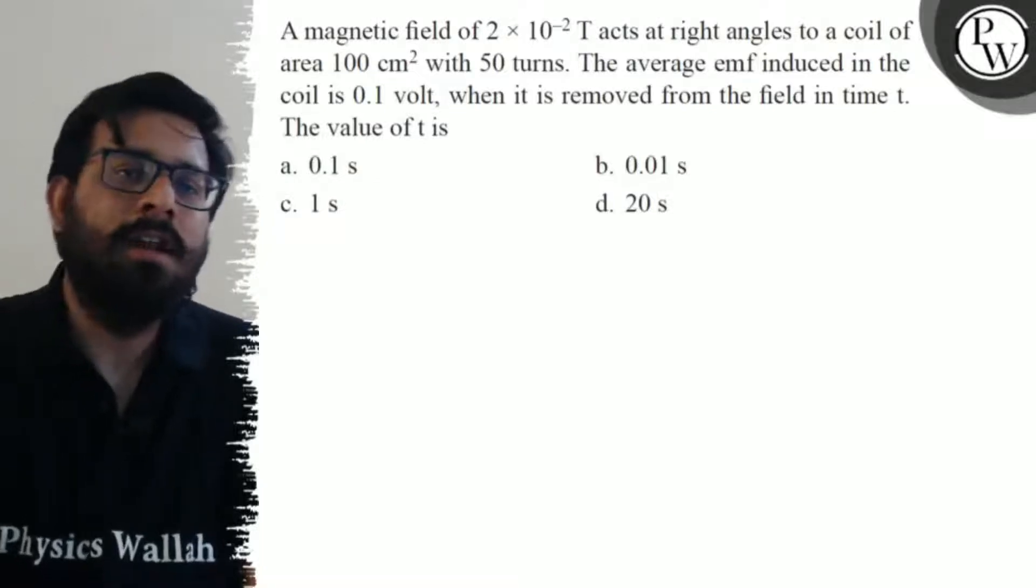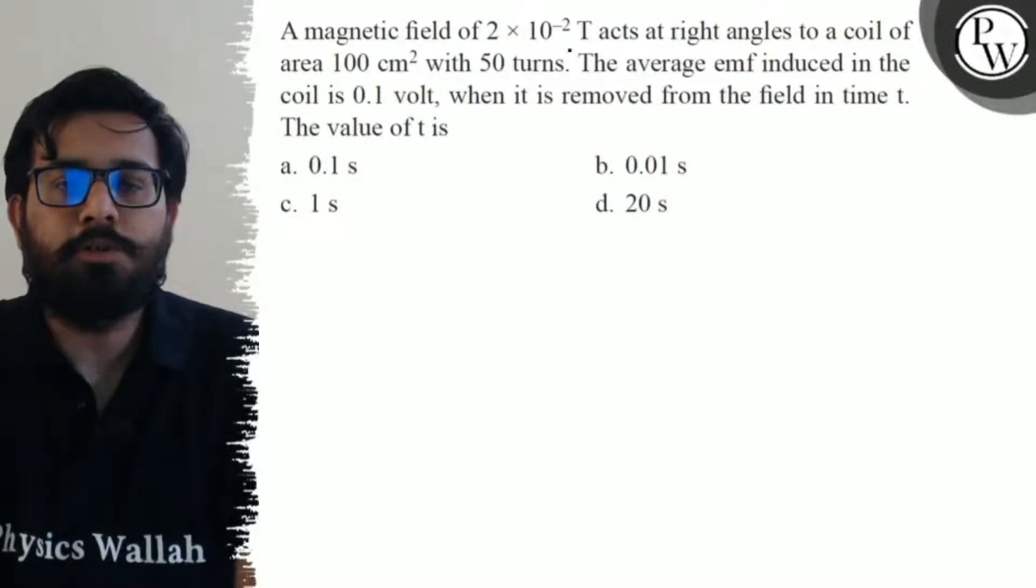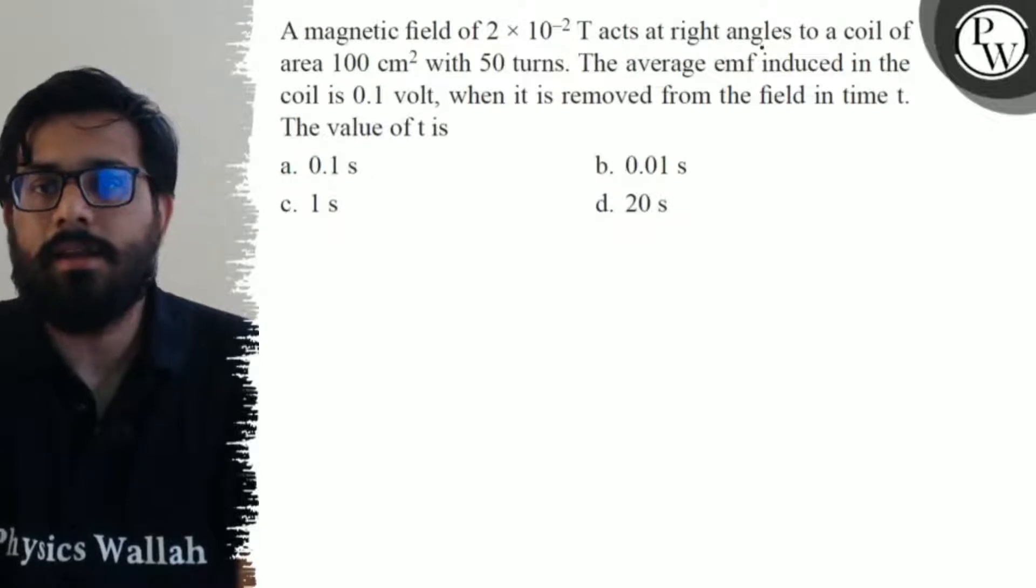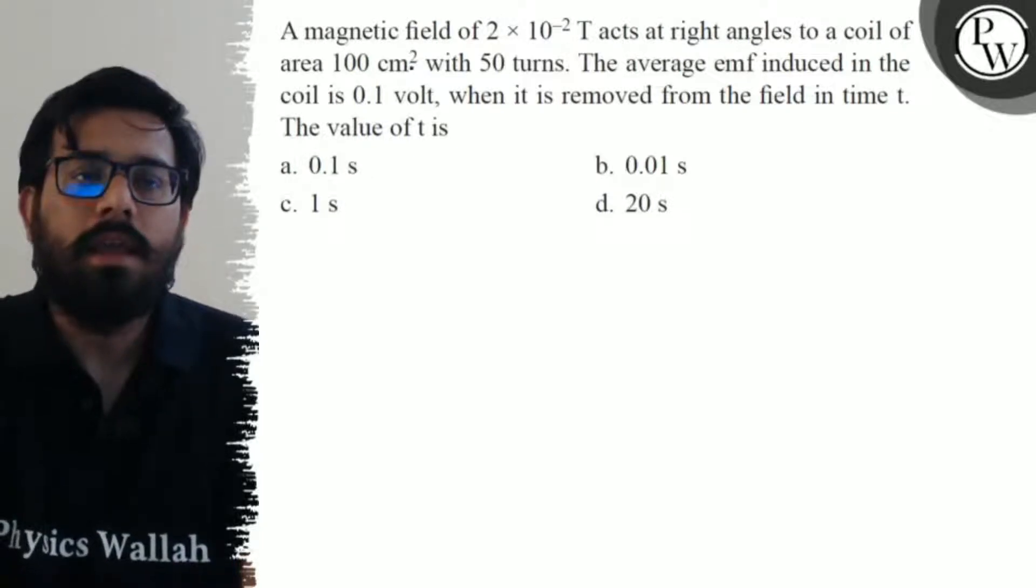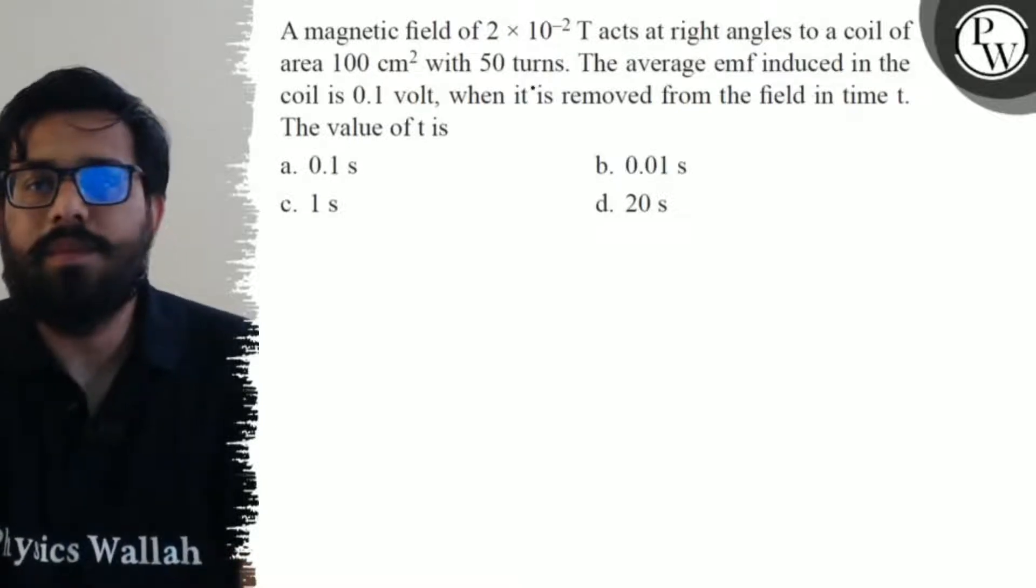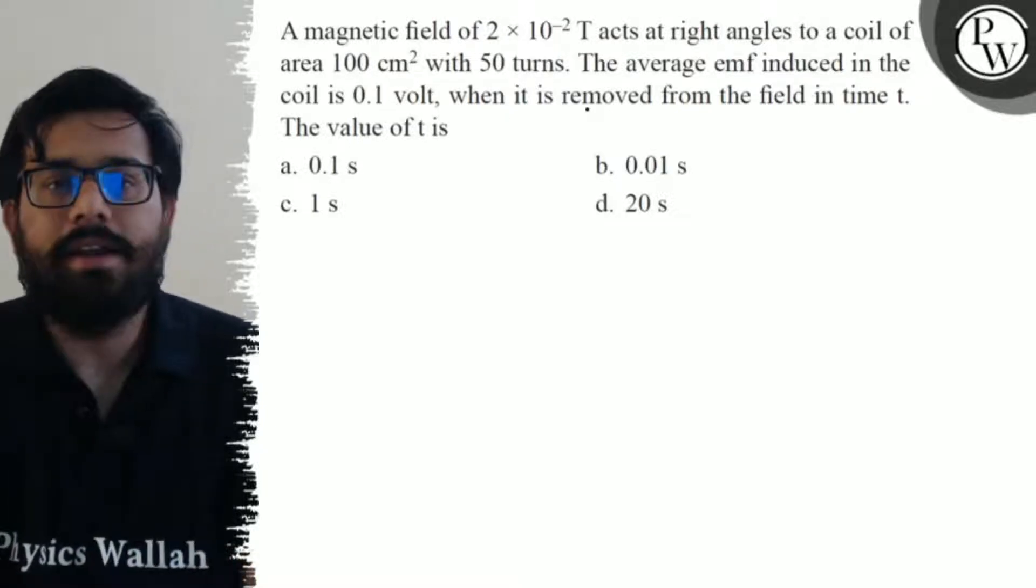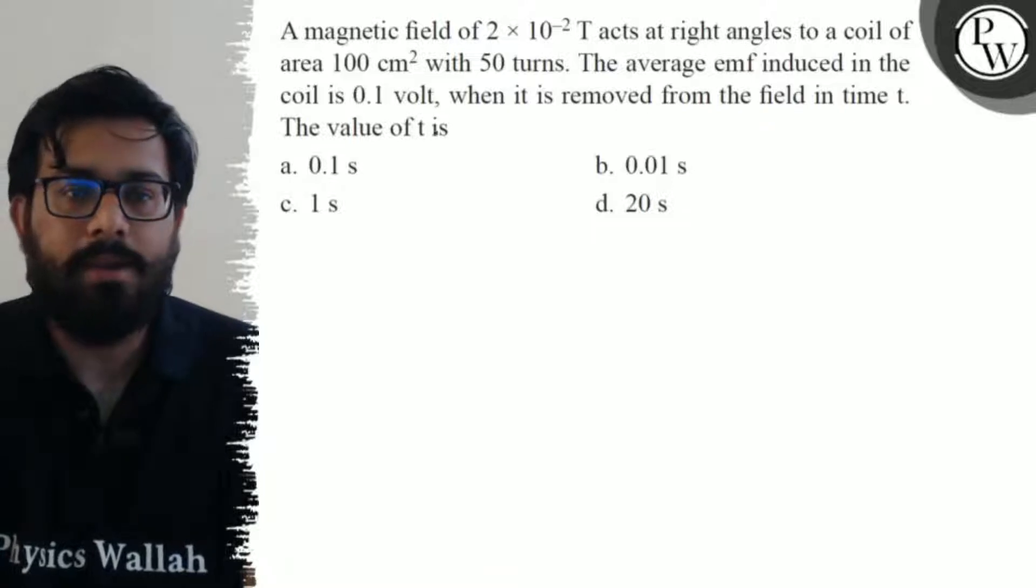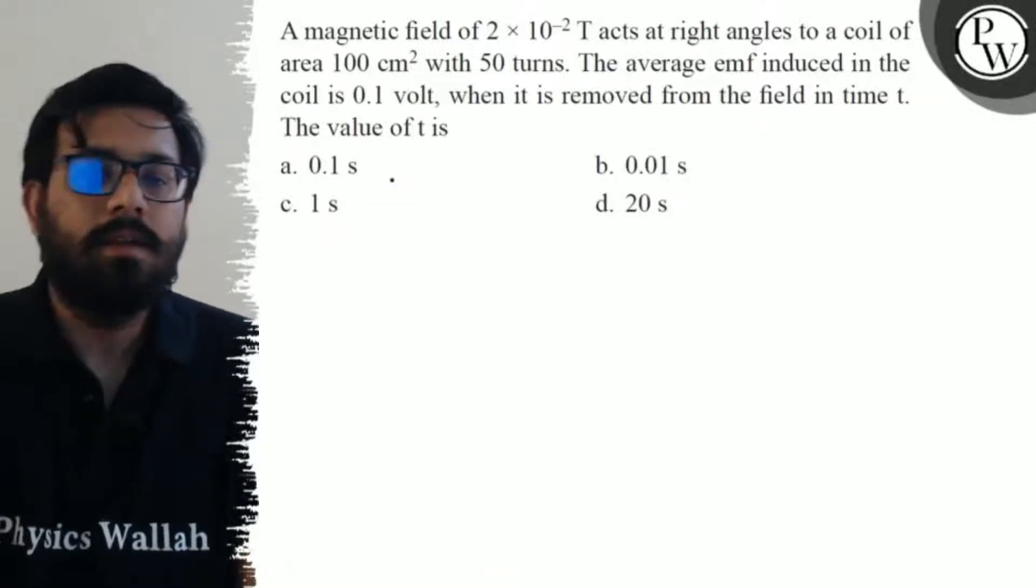Hello! Let's see the question. A magnetic field of 2 × 10^-2 Tesla acts at a right angle to a coil of area 100 cm² with 50 turns. The average EMF induced in the coil is 0.1 volt when it is removed from the field in time t. The value of t is: